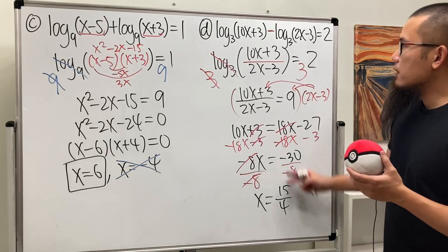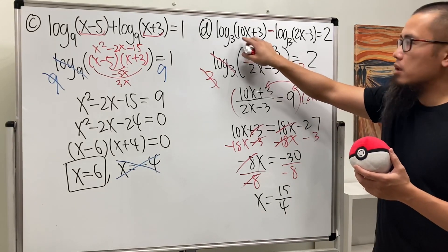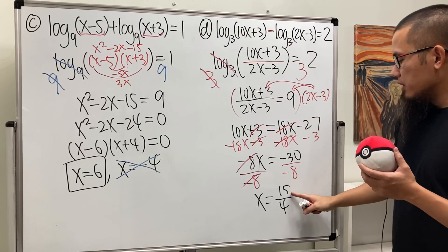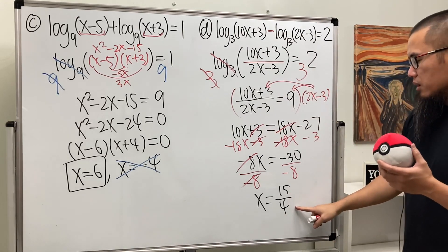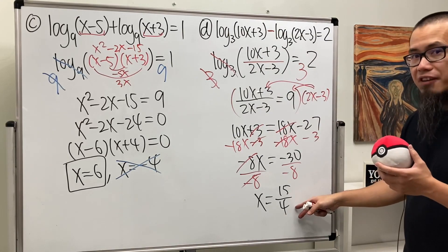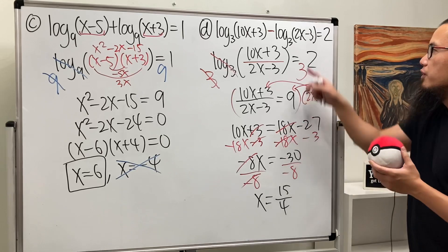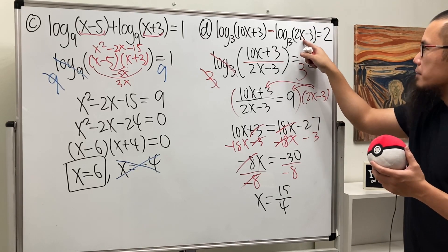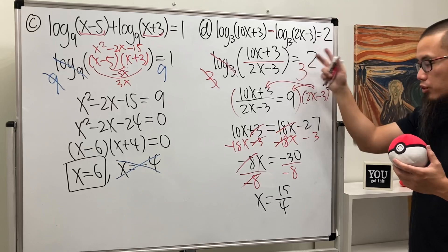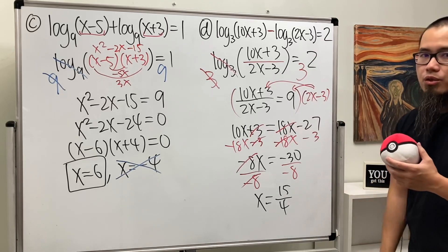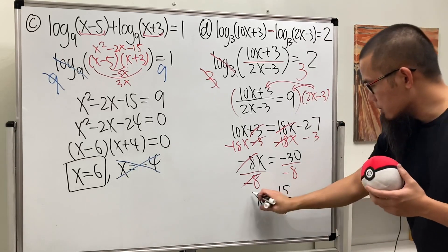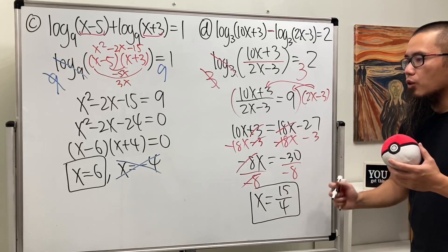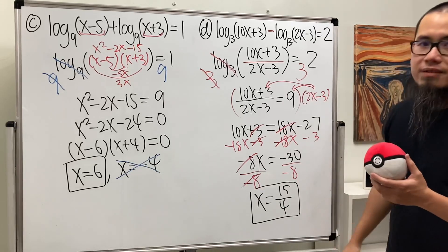x equals 15/4 is positive, so when you plug back in, the numerator 10x plus 3 is positive. And 15/4 is about 3.75, so 2 times that minus 3 is also positive. So this is going to work. The answer is x equals 15 over 4.